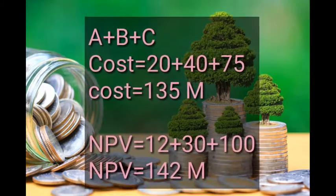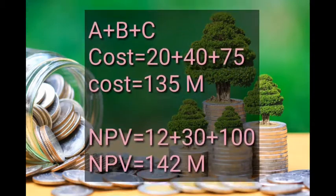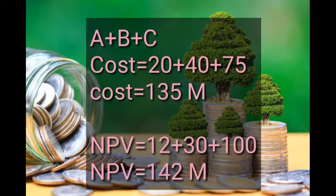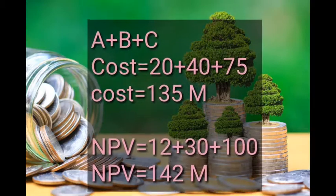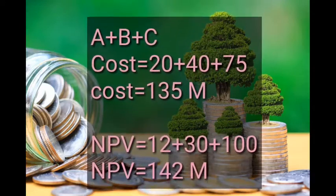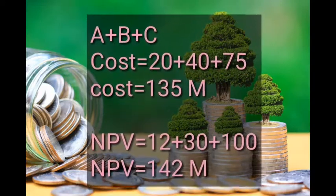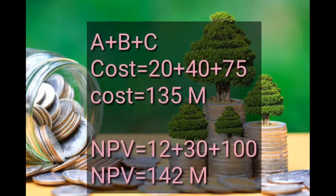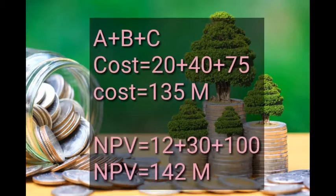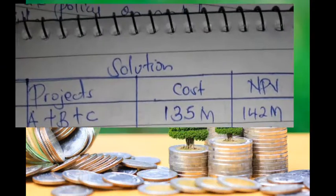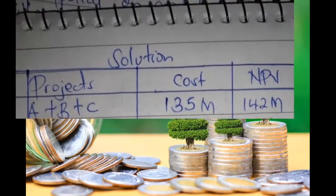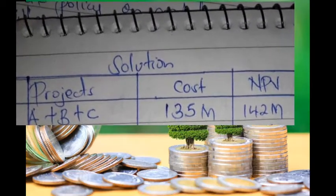For the first combination, we try projects A, B, and C. The cost for A is 20 million, B is 40 million, and C is 75 million, giving a total cost of 135 million. Adding their NPVs gives a total of 142 million. Since the total expenditure is 200 million and this combination only uses 135 million, we record it — projects A+B+C, total cost 135M, total NPV 142M — and look for a better combination.